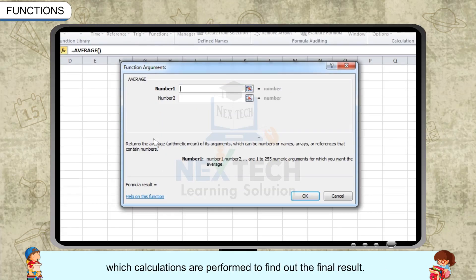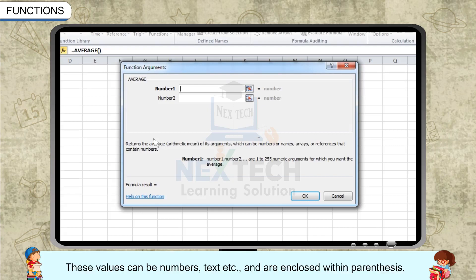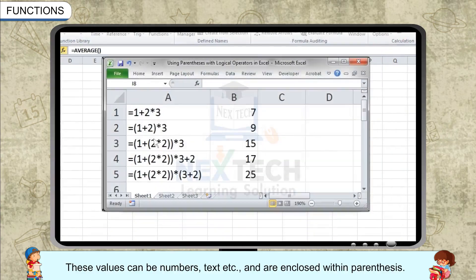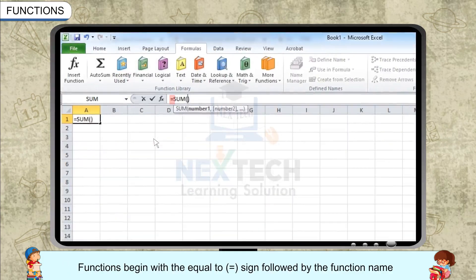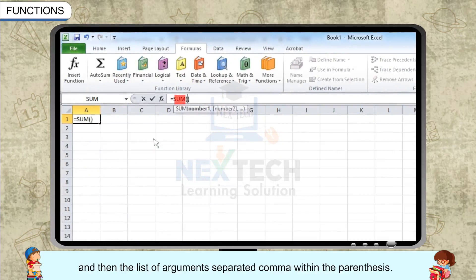Calculations are performed on these arguments to find the final result. These values can be numbers, text, etc., and are enclosed within parenthesis. Functions begin with the equal to sign, followed by the function name, and then the list of arguments.